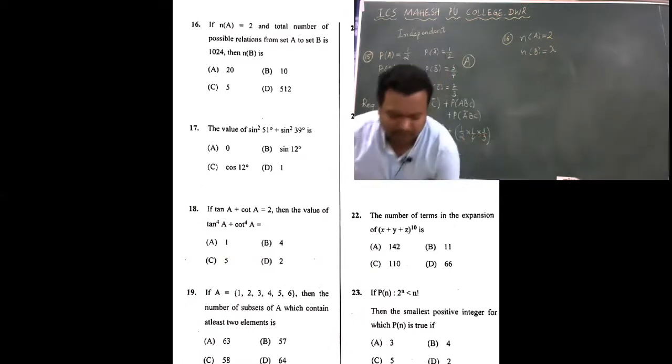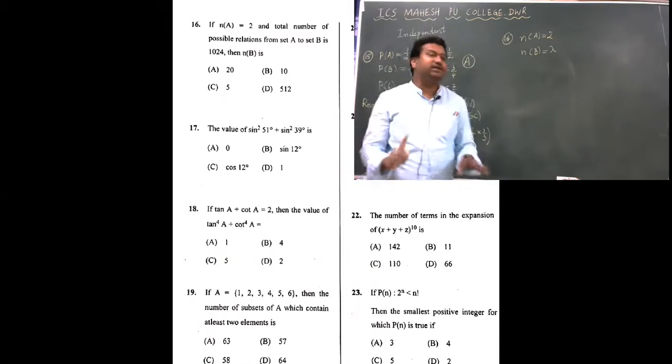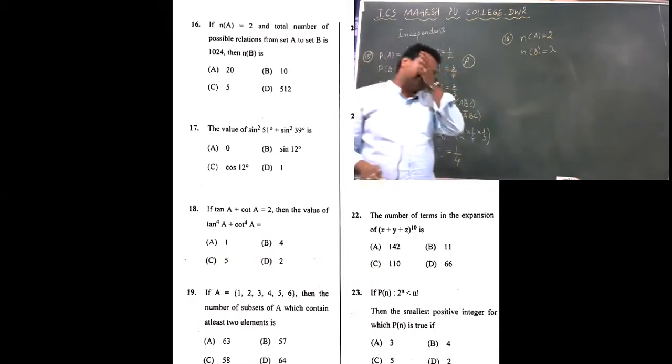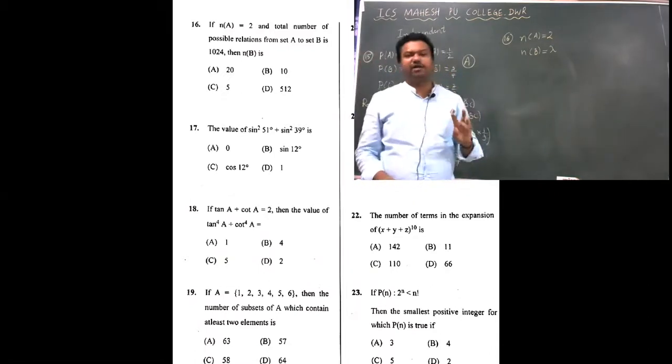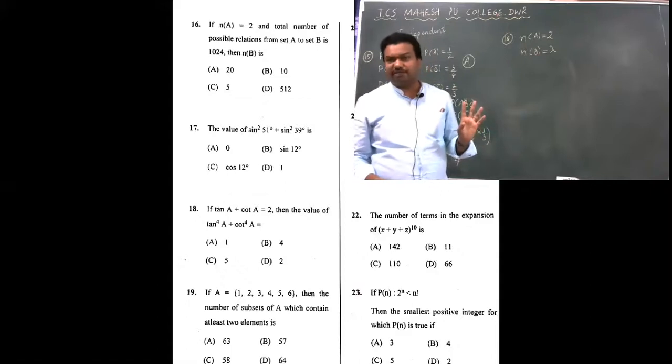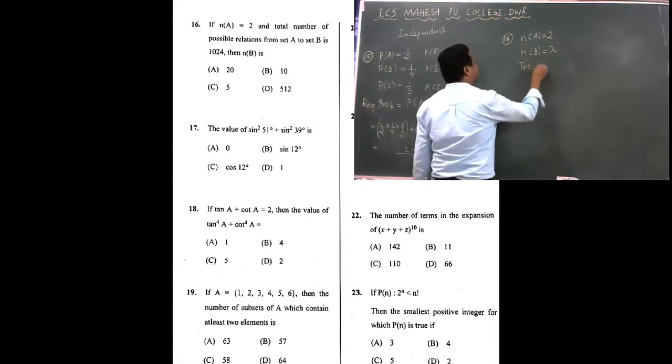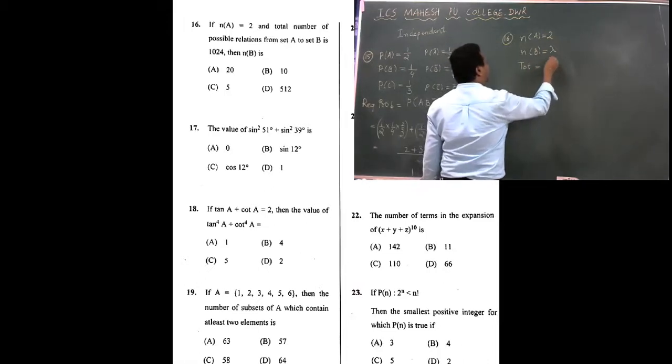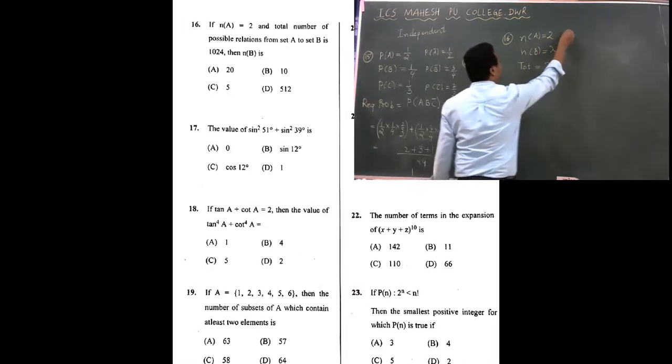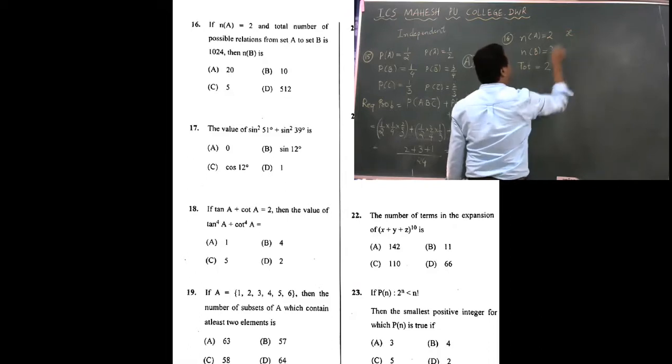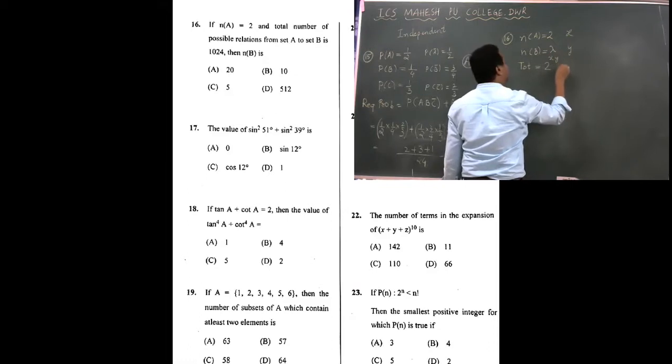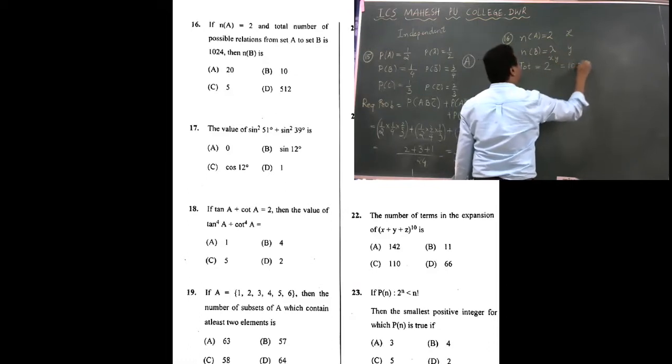He has given the total number of relations. The total number of relations is always equal to 2 to the power... suppose if set A has x elements and set B has y elements, then 2 raised to x times y equals 1024.